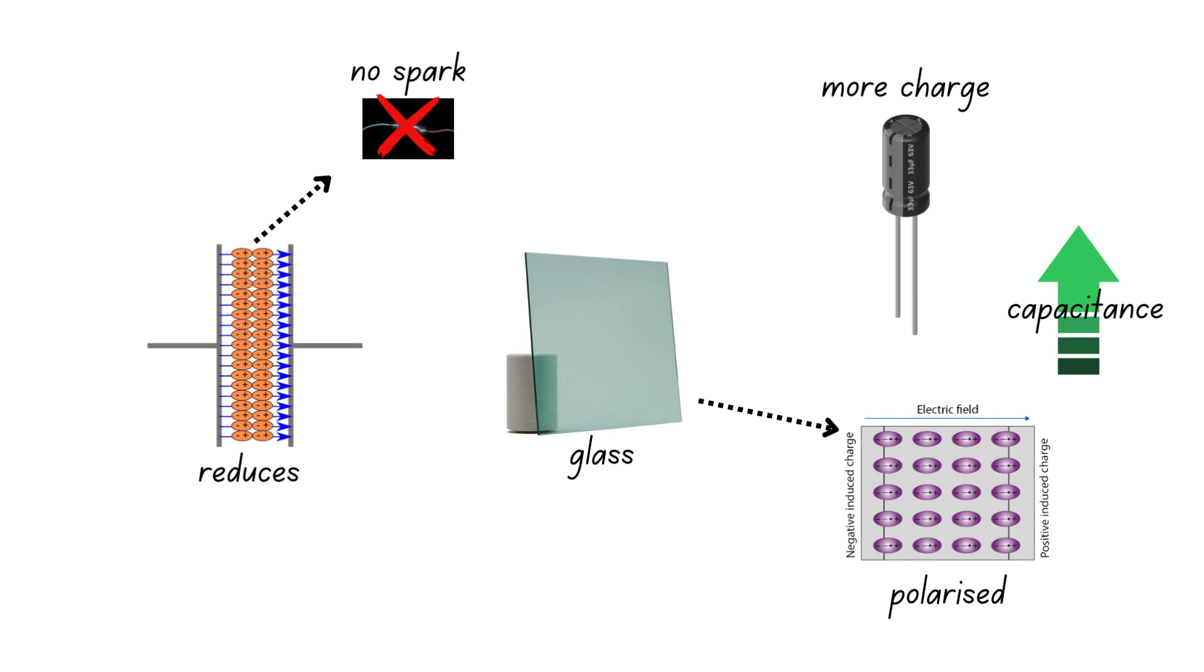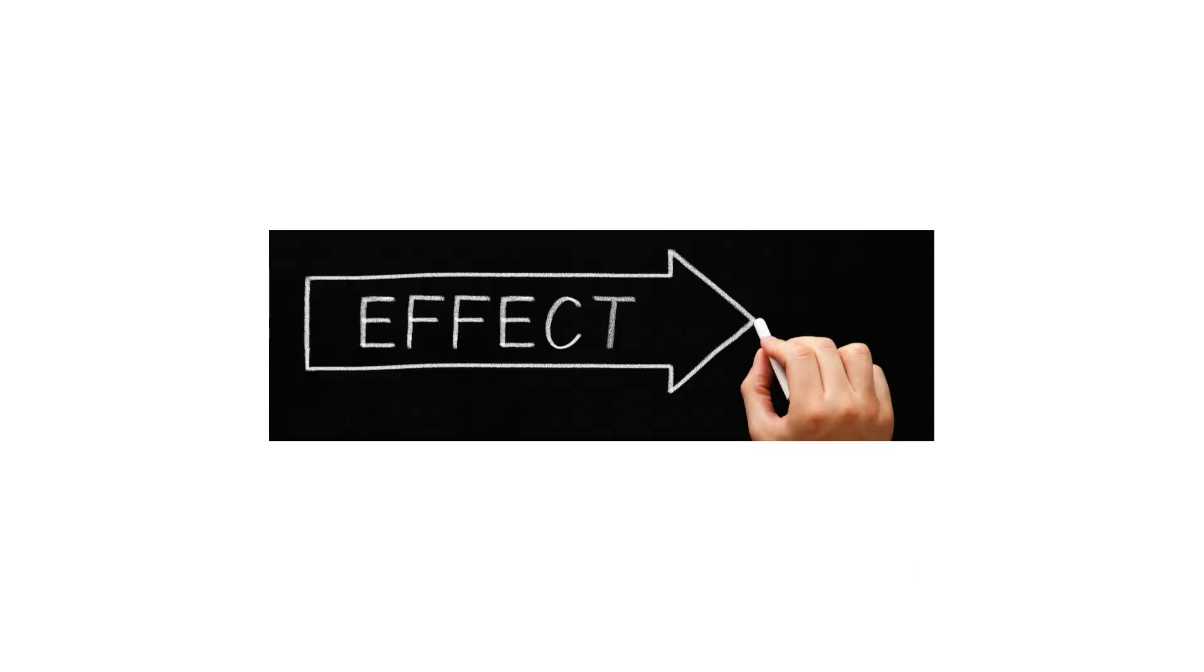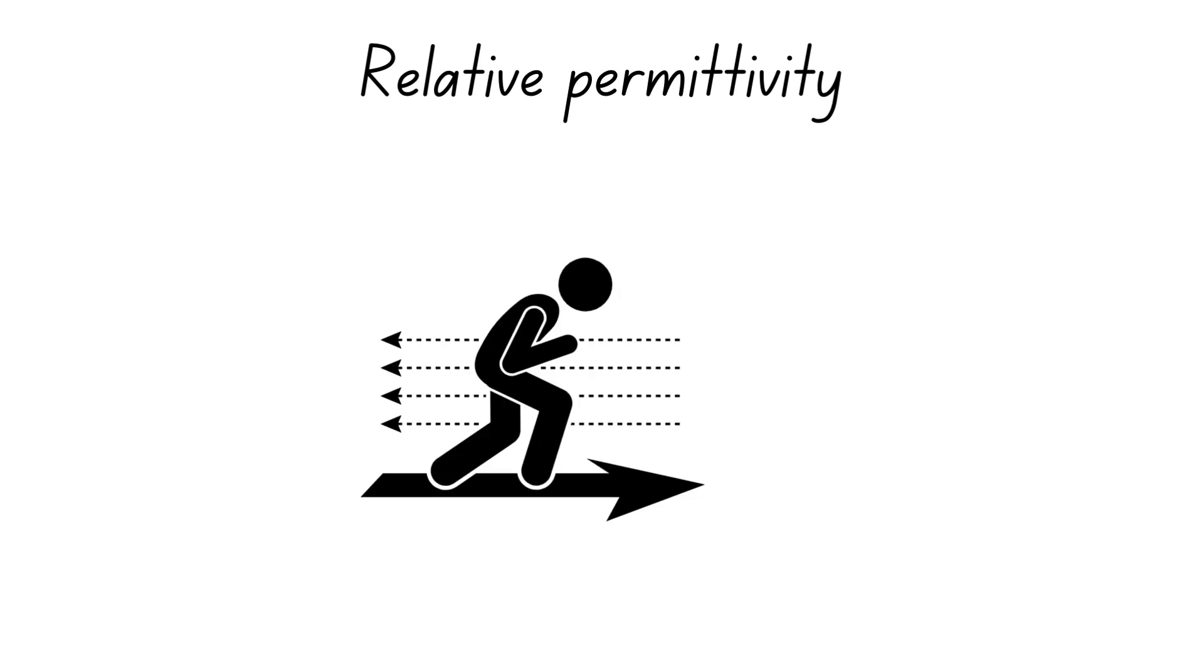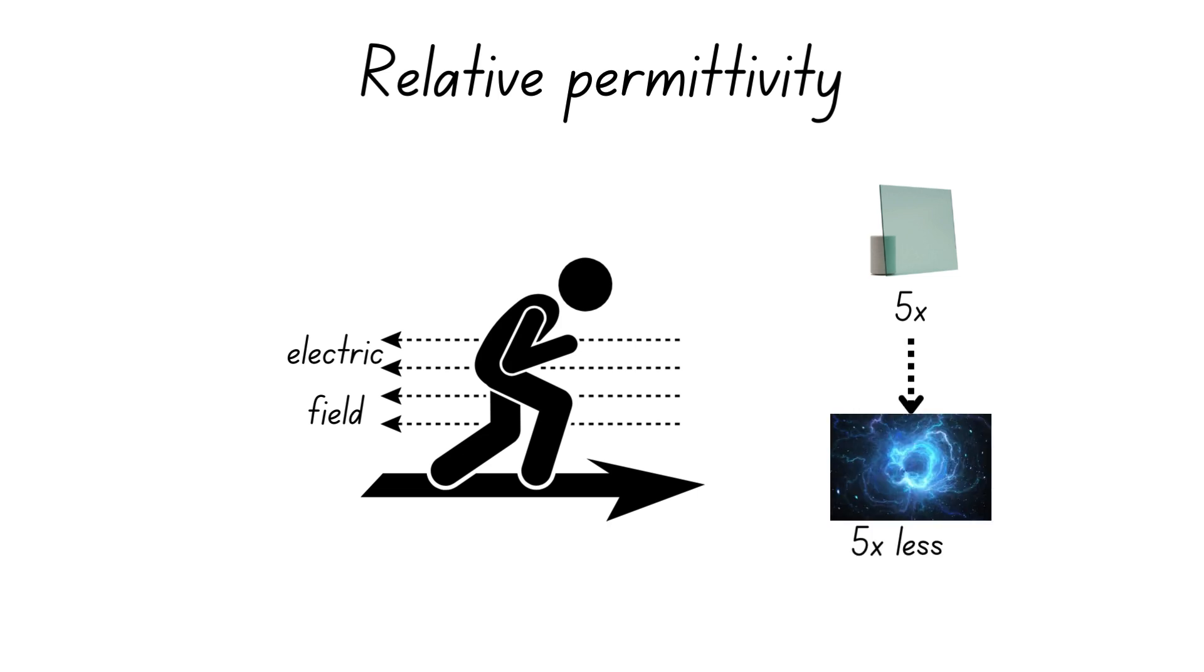The quantity used to evaluate the effect of a dielectric is called the relative permittivity, which is how well a material resists permeation of an electric field. This is measured relative to that of a vacuum. And for glass, the relative permittivity is 5, meaning glass reduces the effective electric field between the plates by 5 times from the one produced in a vacuum.